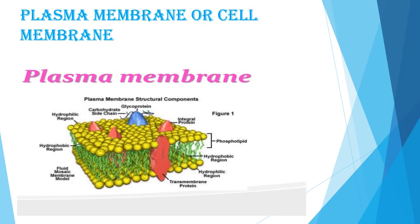Let's study the plasma membrane or cell membrane first. The plasma membrane is the outermost covering of all cells. It separates the cell contents from the external environment. Every cell is bounded by an extremely thin, elastic and selectively permeable plasma membrane. It is about 7 to 10 nanometers thick and can only be seen under an electron microscope. It is formed of lipids and proteins and cannot be separated from the cell cytoplasm. Here you can see the structure of the plasma membrane.